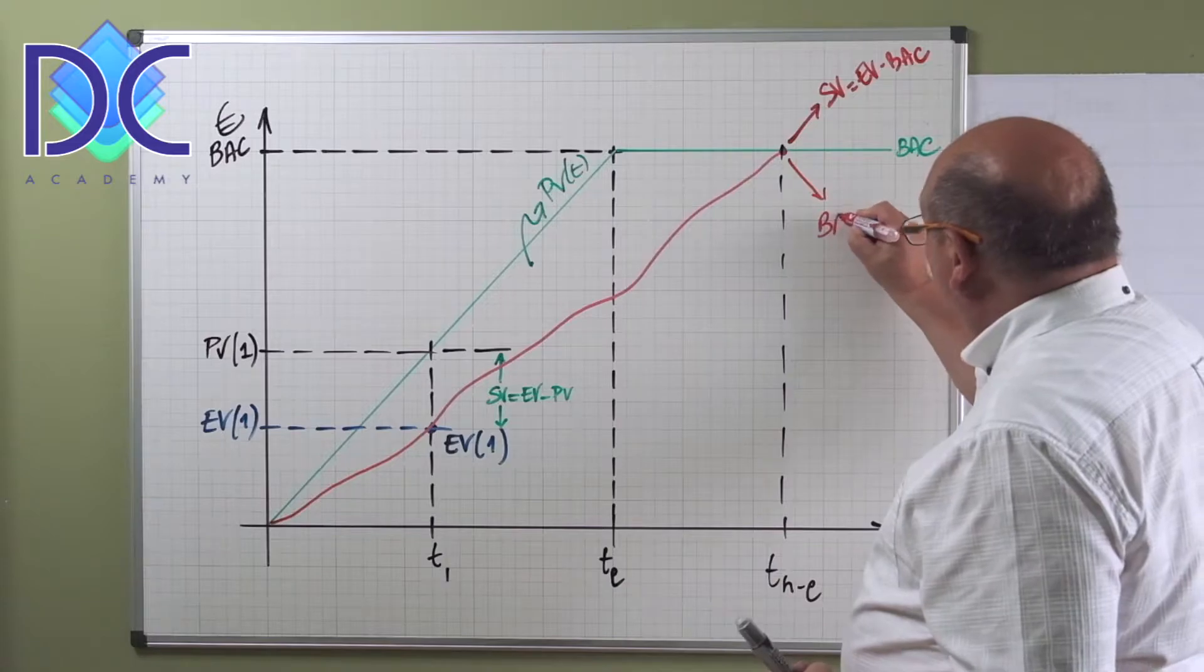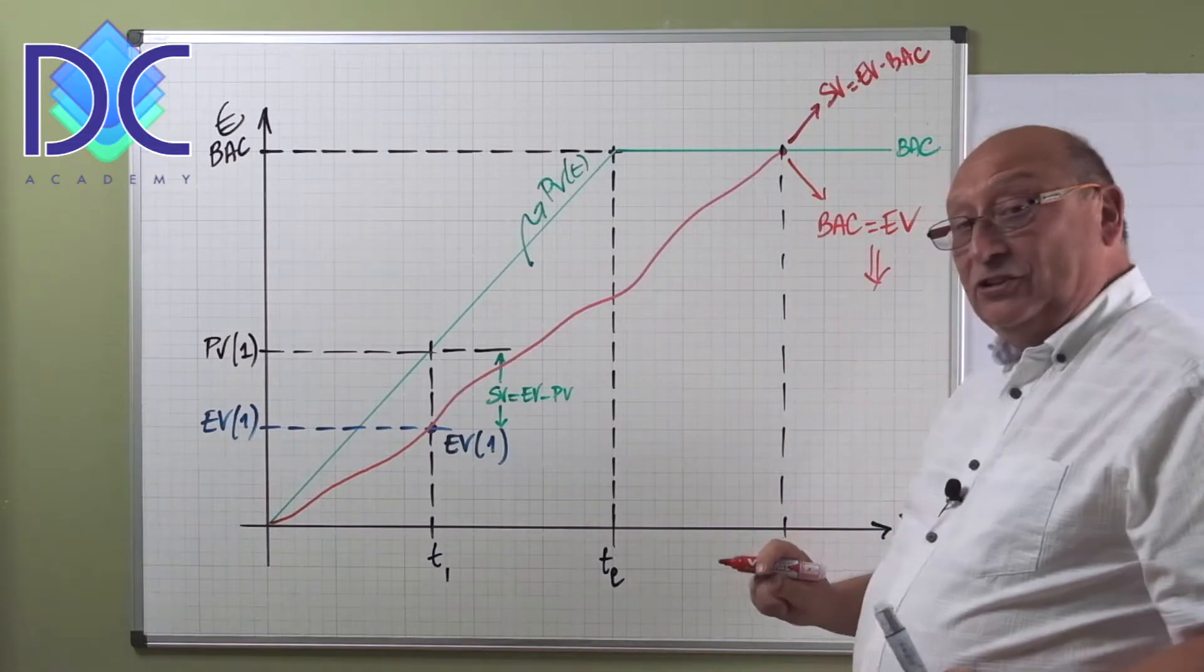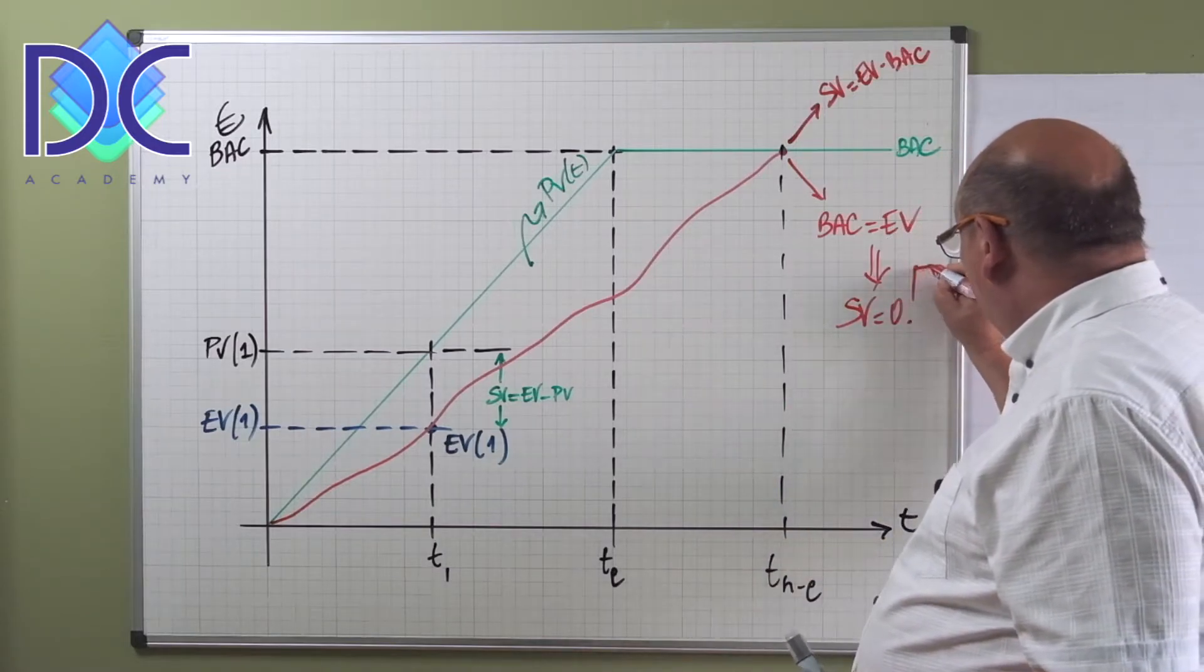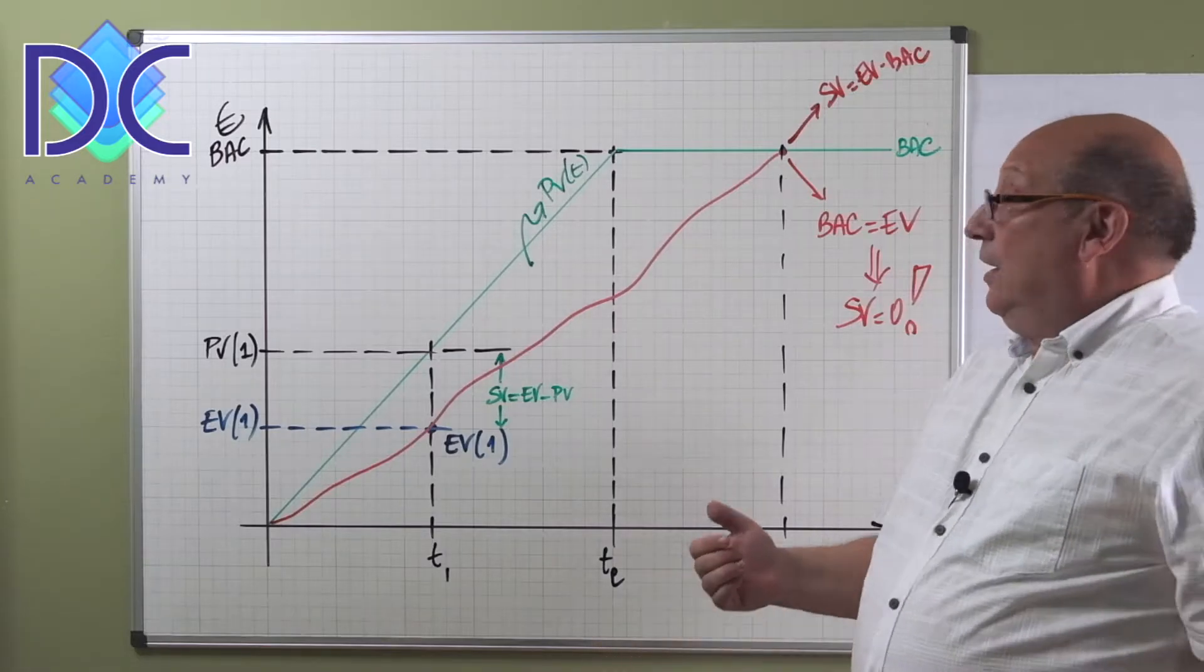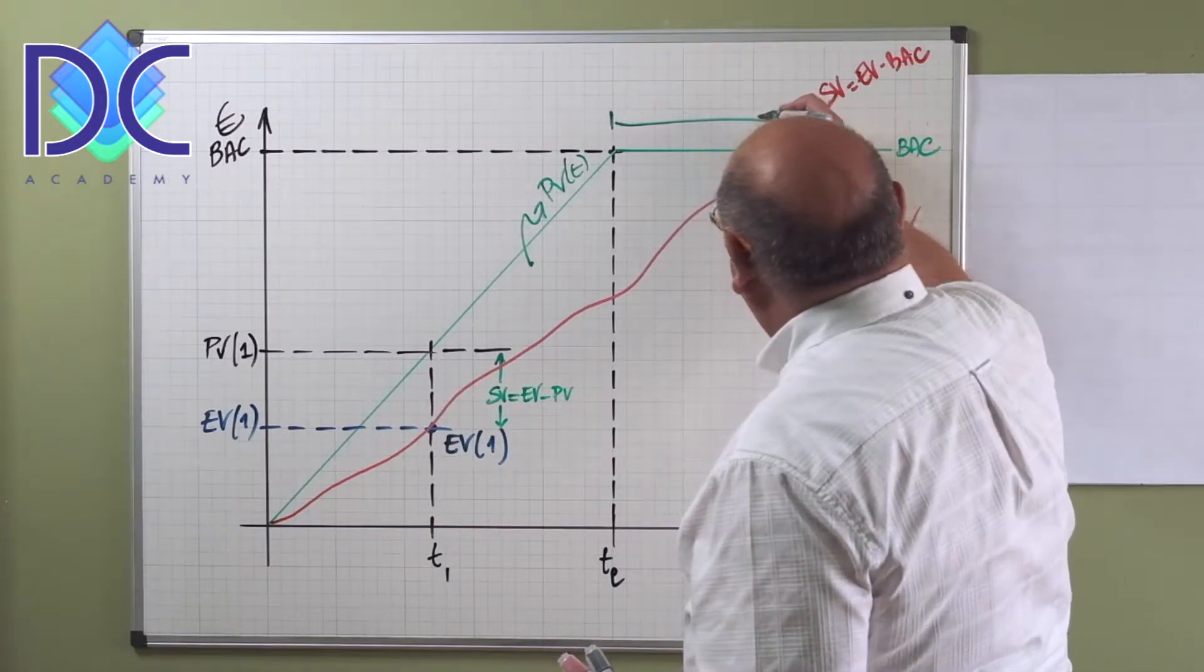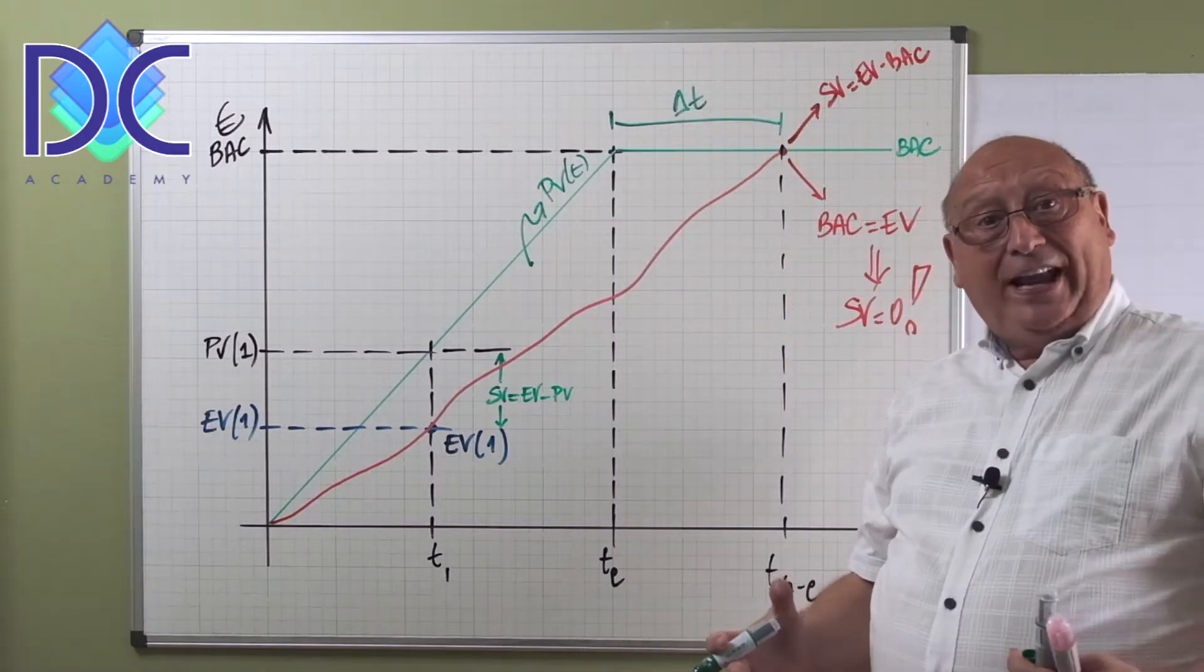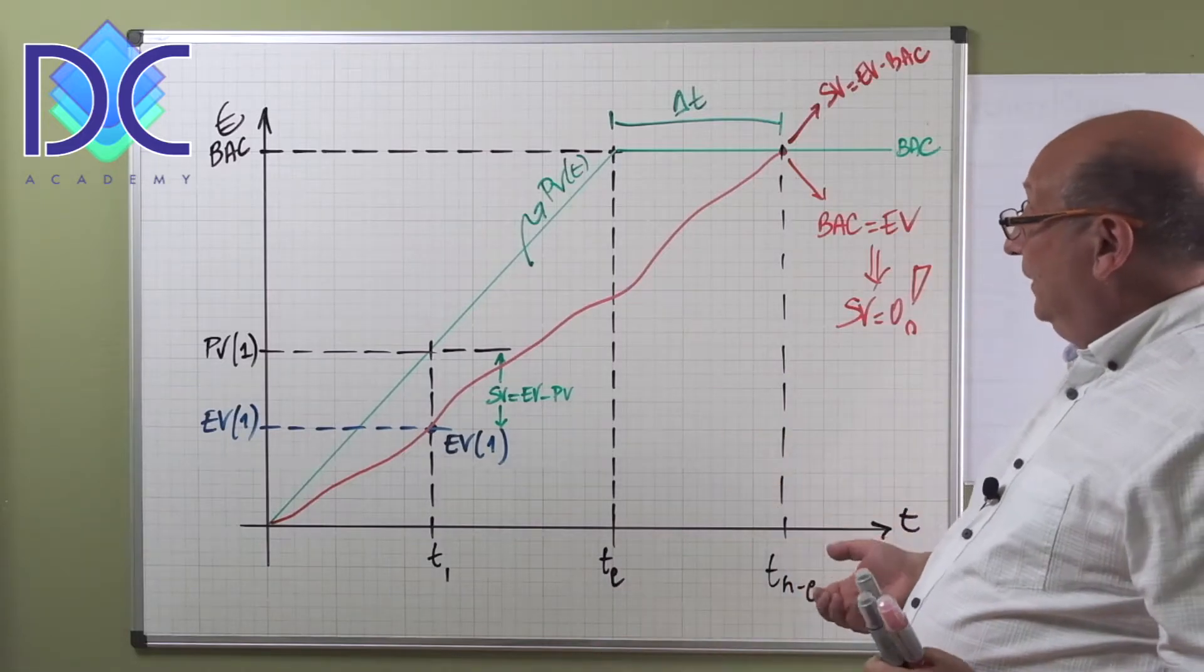Now what happens here when we calculate the schedule variance? The schedule variance is still earned value minus BAC. Now in this case we finished everything, so we earned the totality of the project. So in this point the BAC is equal to the earned value, which also leads to the fact that the schedule variance is zero.